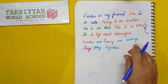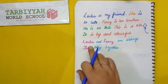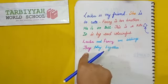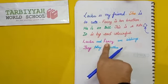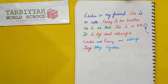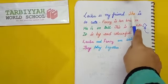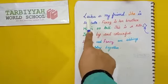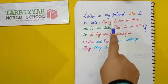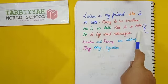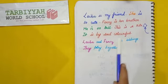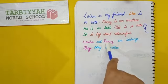'Laiba and Faraz are siblings. They play together.' Instead of repeating the names Laiba and Faraz — there are two persons, more than one — so we use 'they.' We use 'she' in place of Laiba, 'he' in place of Faraz, 'it' in place of kite, and 'they' in place of Laiba and Faraz. The words that are used in place of nouns are called pronouns.